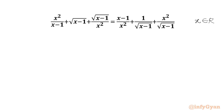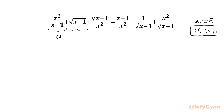Square root of (x minus 1) is involved, so our answer must be greater than 1. Now I will use substitutions straight away. Let us say x² over (x minus 1) is a, and square root of (x minus 1) is b.